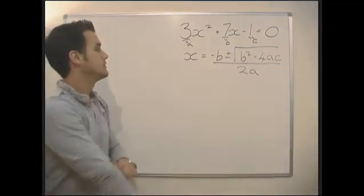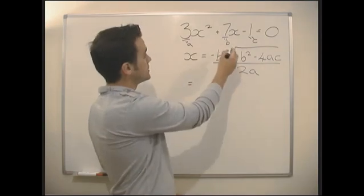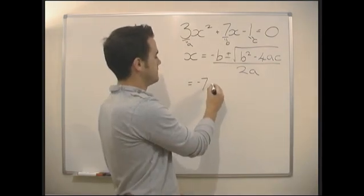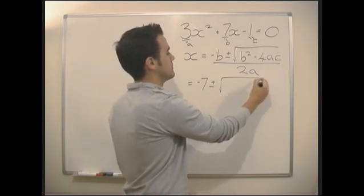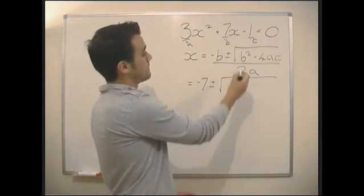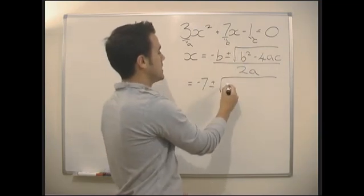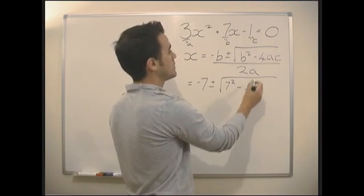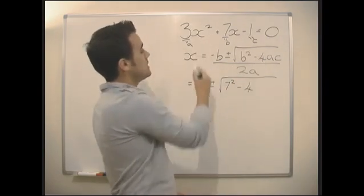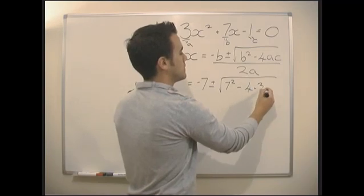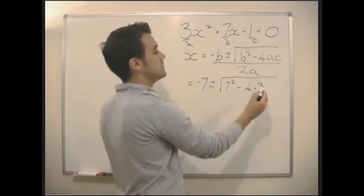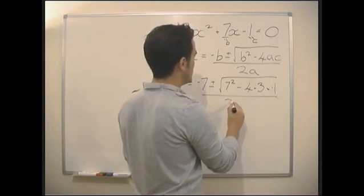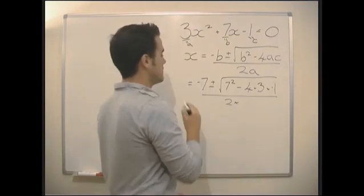Let's work through this. x equals minus b — b is 7, so minus 7 — plus or minus the square root of b squared, that's 7 squared, minus 4 times a, which is 3, times c, which is minus 1. All divided by 2 times a, which is 3.